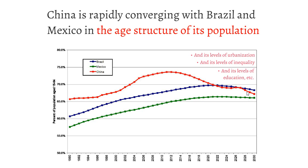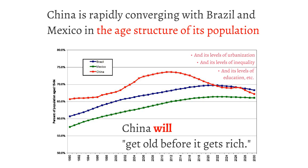It's not just the age structure of the population — it's urbanization, inequality, and levels of education. All of these are still approaching levels found in Brazil and Mexico and will soon be there. In the year 2020, China statistically will resemble nothing more than a very, very large Brazil. And China will get old before it gets rich.